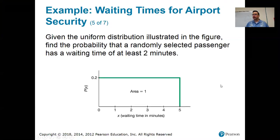Okay. So now they're ready to ask me a question. Given the uniform distribution illustrated in the figure, find the probability that a randomly selected passenger has a waiting time of at least two minutes. At least two minutes. Okay. Uniform probability problems are really, really easy. Every single one is just finding the area of a rectangle.